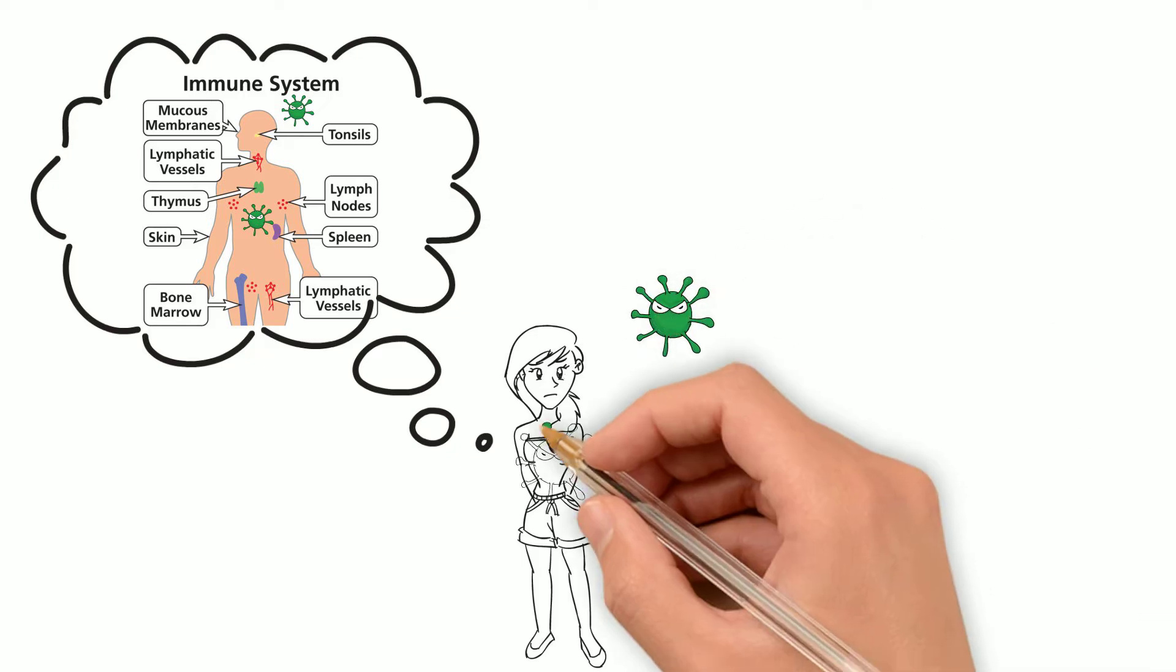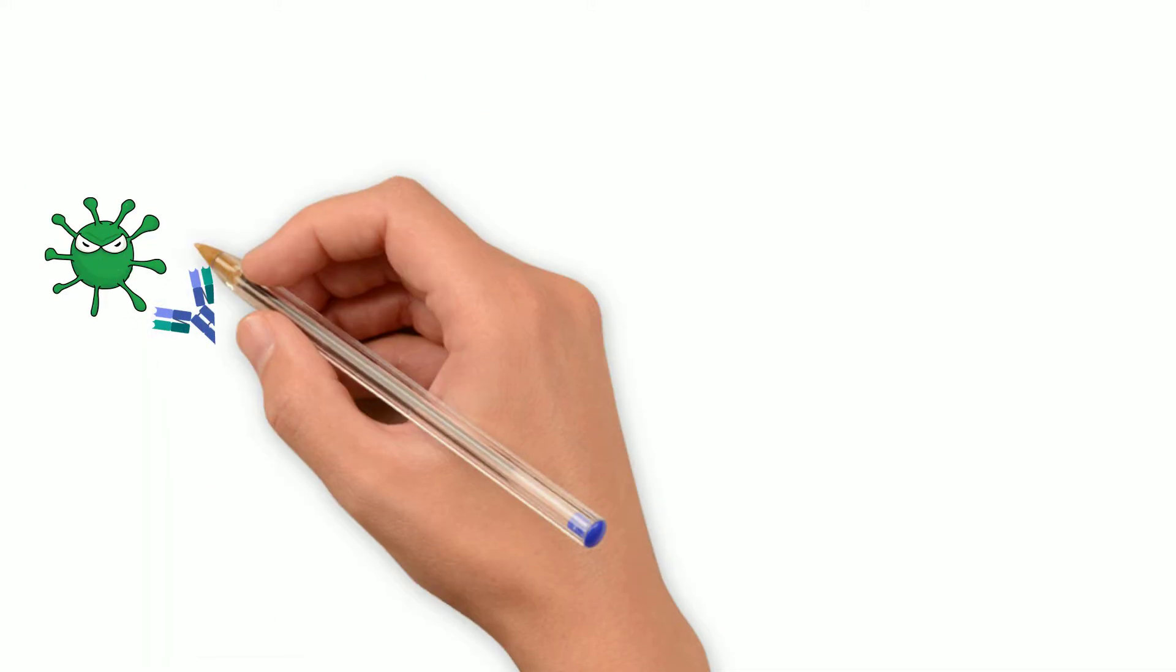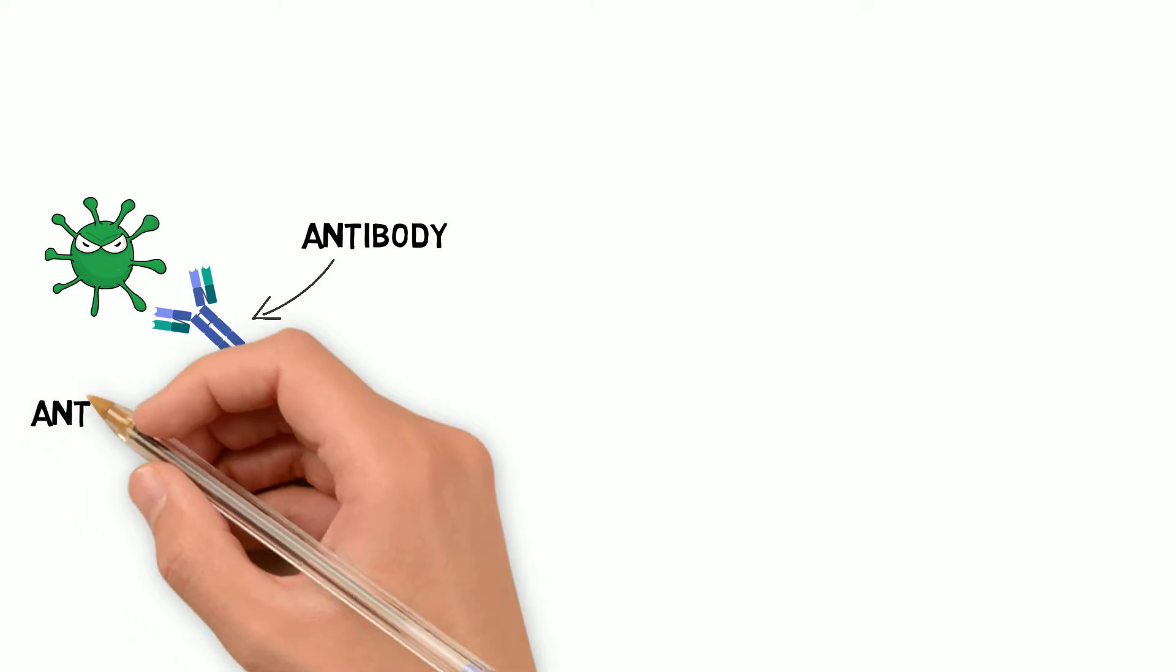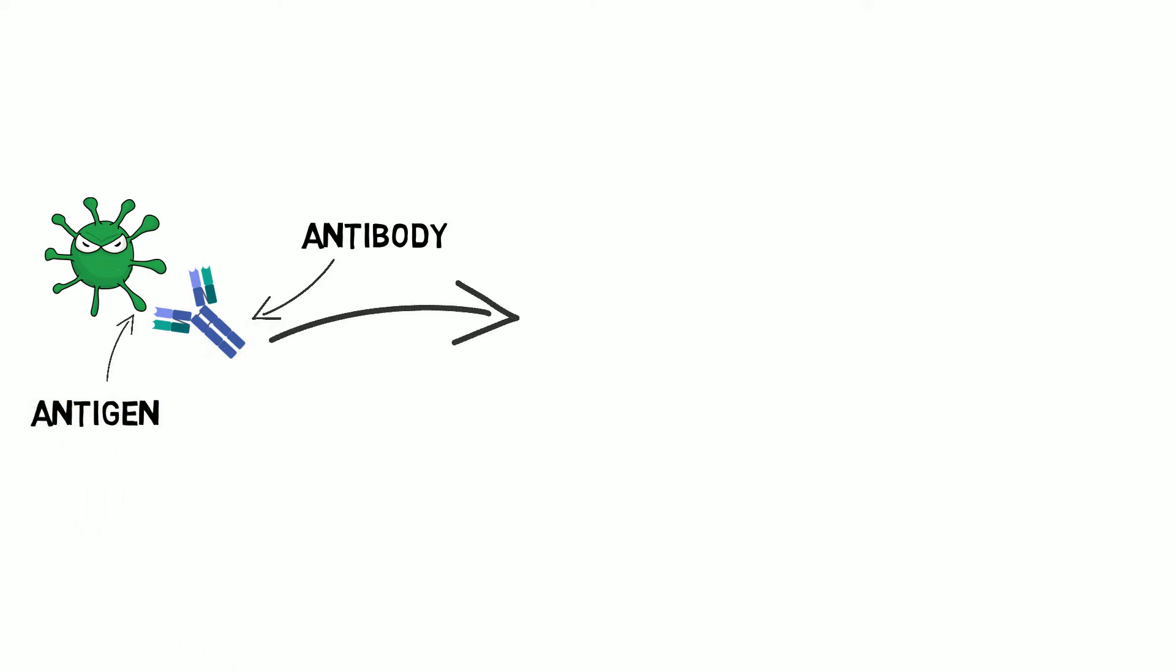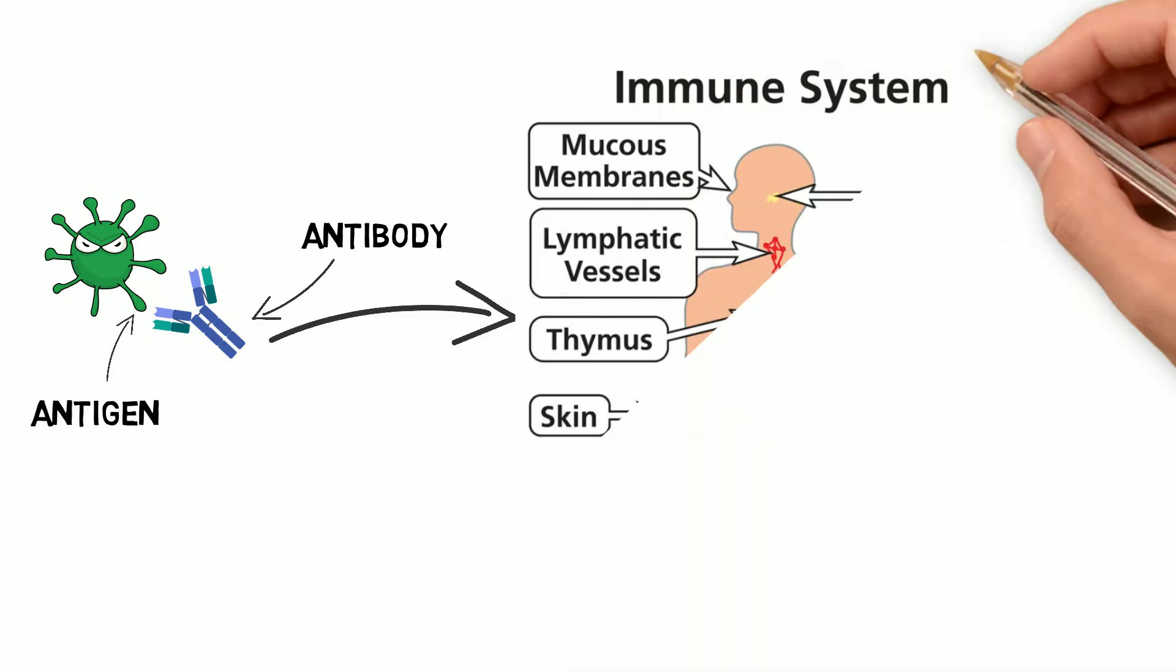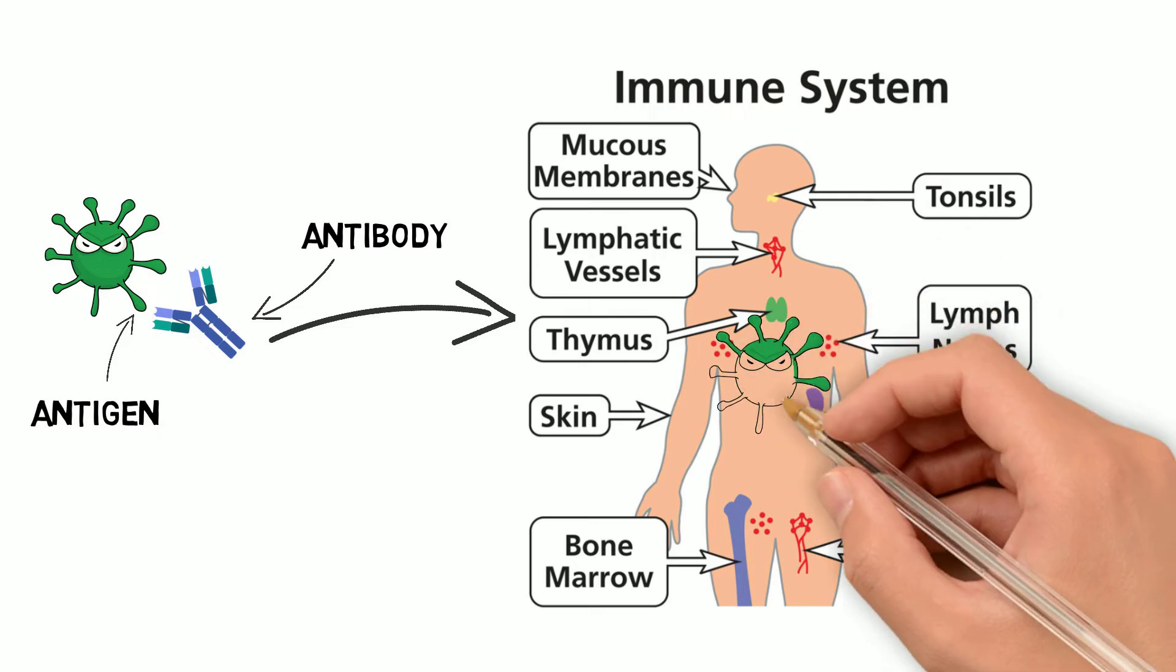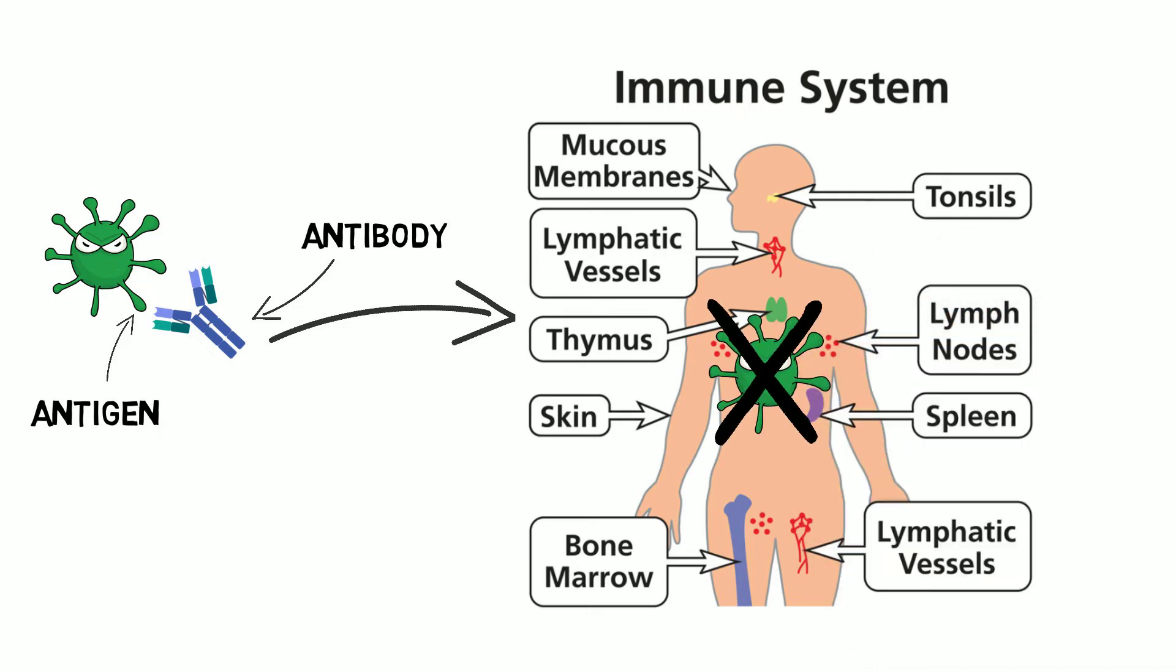For each pathogen that attacks your body, your adaptive immune system creates a protein called an antibody that specifically recognizes a part of the pathogen called an antigen. This antibody binds to the antigen and signals other parts of your immune system to attack the pathogen so that it's unable to function and make you sick.